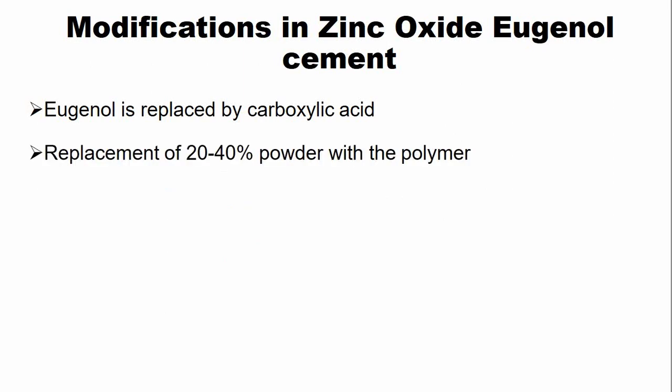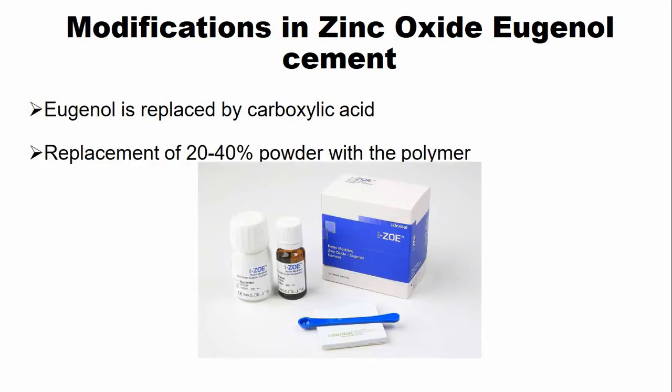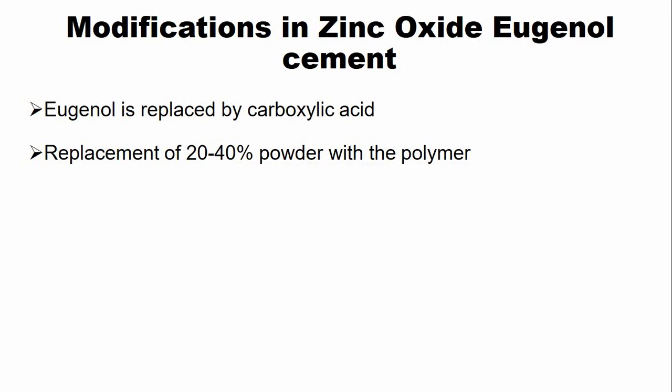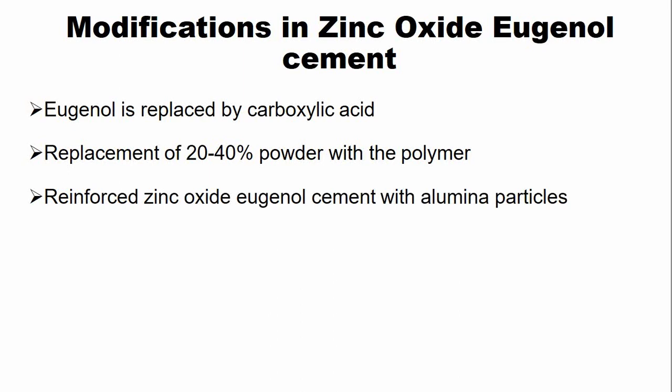Another modification is that around 20 to 40 percent of the powder is replaced with polymer to increase the strength of the cement. Sometimes aluminium particles are also added into the powder to increase the strength of the zinc oxide eugenol cement.